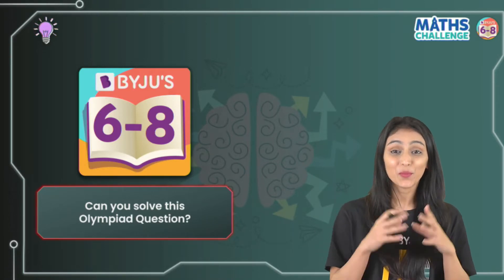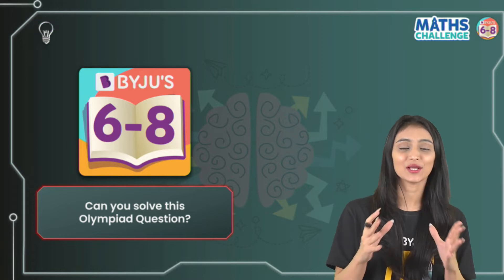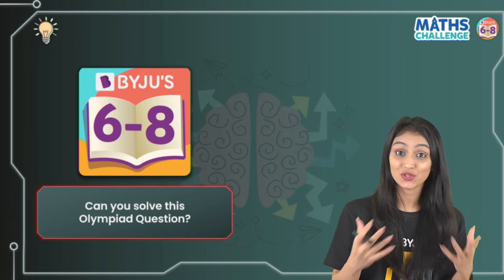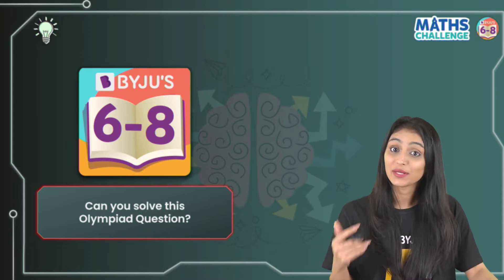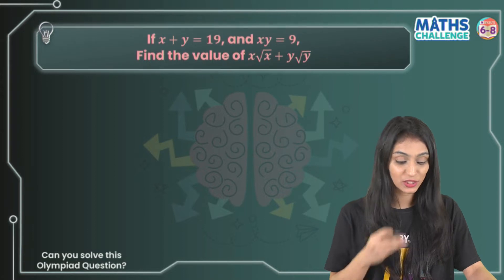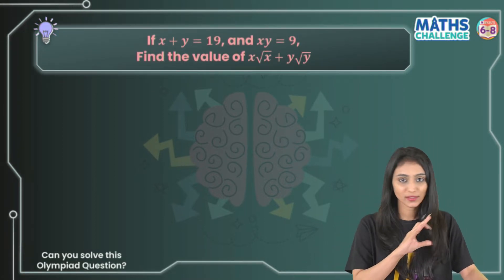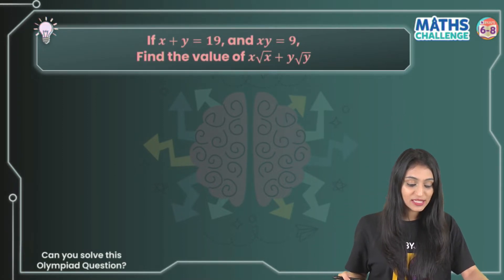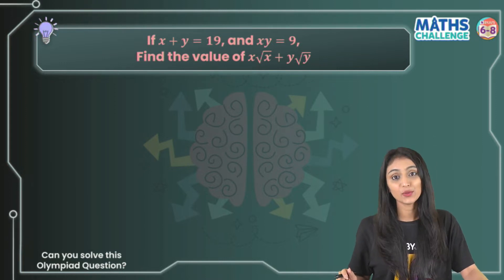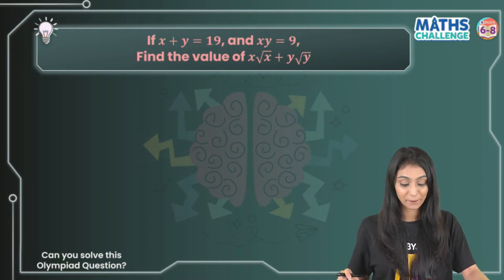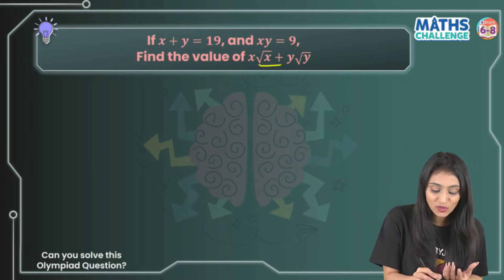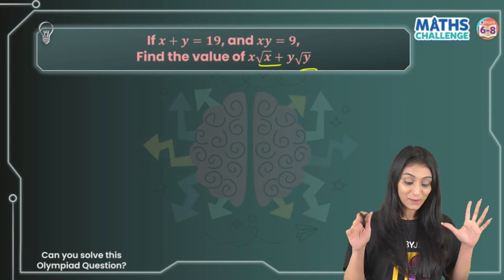Hey students, today I'm here with a very interesting Olympiad question — don't get scared. It would be tricky, yes, but it's very interesting and I'll be using basic algebraic identities that you have in your school books. No other concept will be used here. The question is: if x plus y equals 19 and xy equals 9, find the value of x√x plus y√y. This question would have been simpler if the root values were not there.